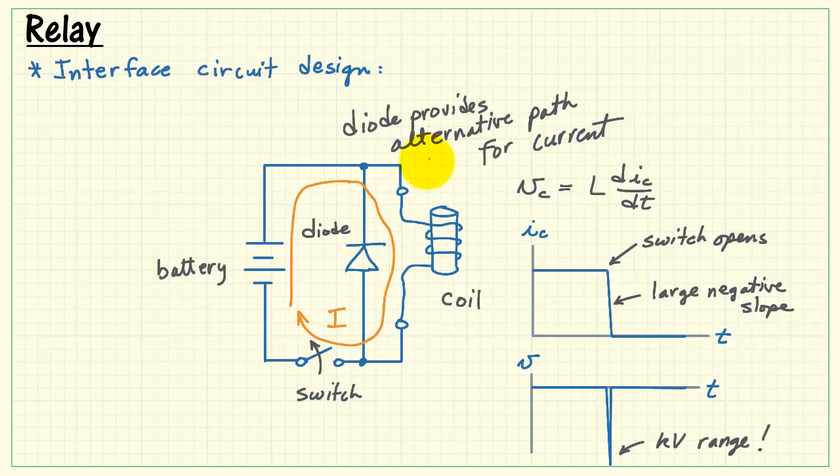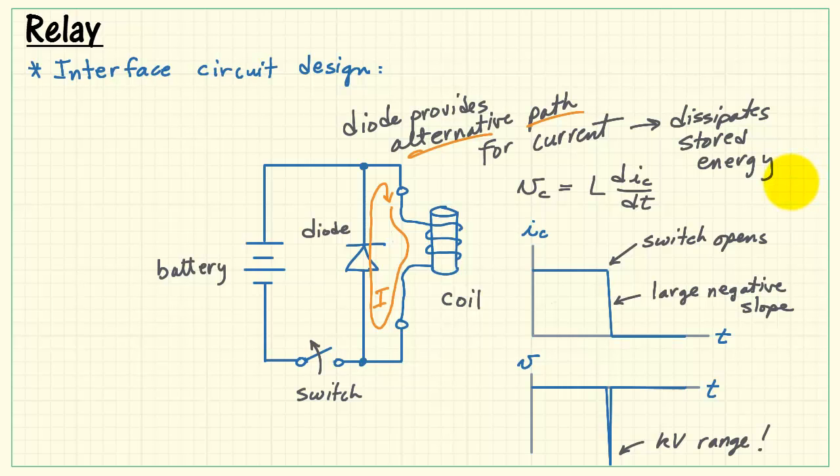But, fortunately, the diode is there, ready to go in the forward bias direction, and it provides an alternative path for the current to flow. That means that the current gets dumped through this diode. That dissipates the stored energy inside the coil, and it protects the switch from arcing.